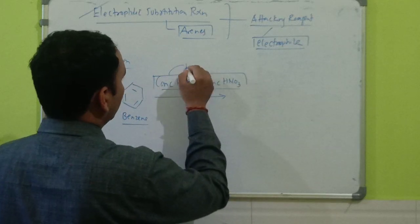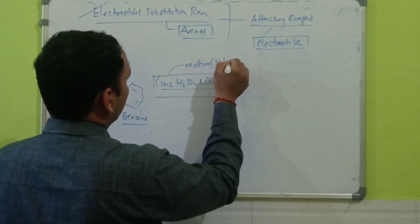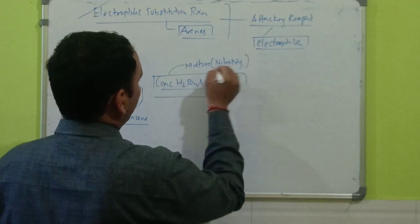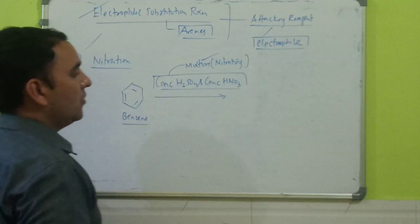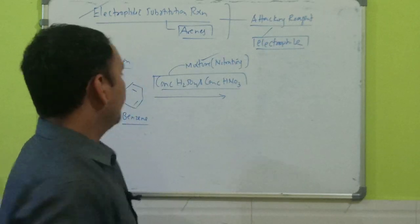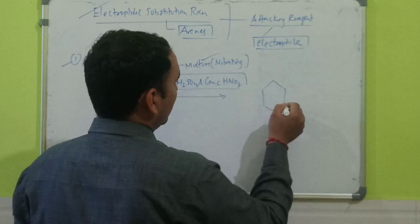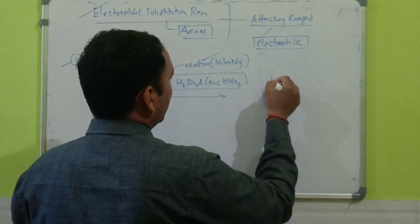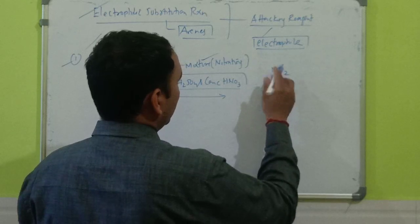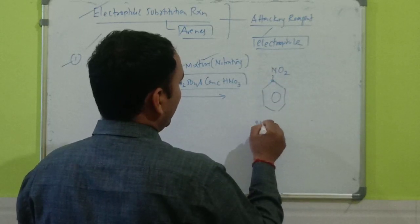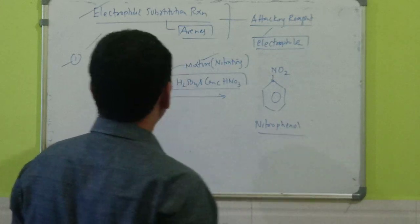This mixture is called nitrating mixture, which is a combination of concentrated H2SO4 and concentrated HNO3. The nitro group will get attached to the carbon and it will form nitrophenol, plus a water molecule.